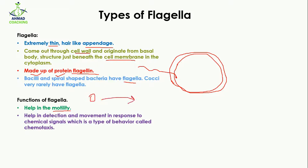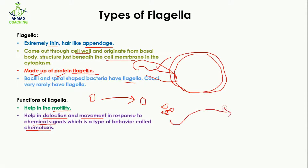Flagella are also responsible for the detection and movement in response to chemical signals, and this type of behavior is known as chemotaxis. For example, if some chemicals present in the environment are dangerous or harmful to the bacteria, the flagella will detect those chemicals and help the bacteria to move away from them by the help of chemotaxis.